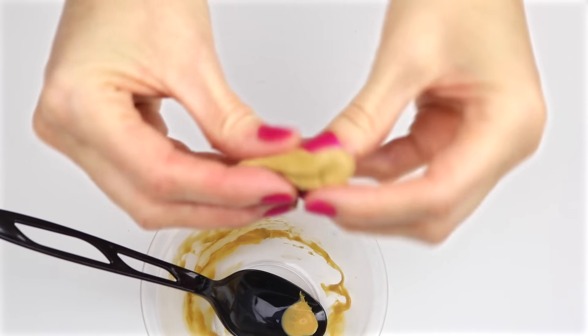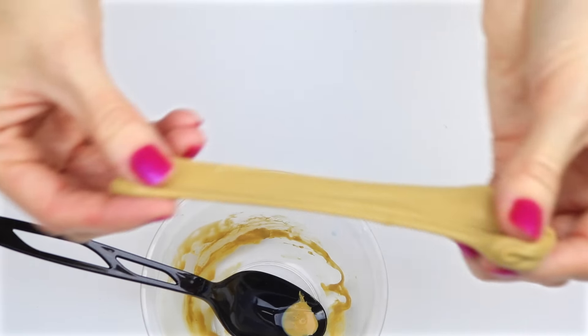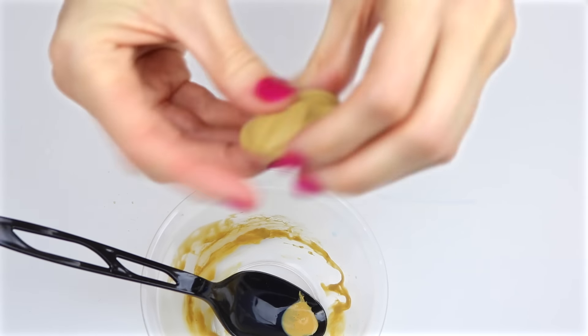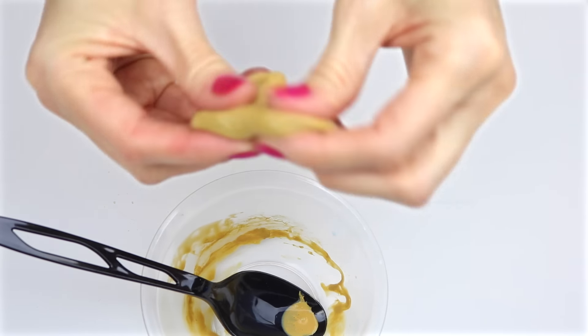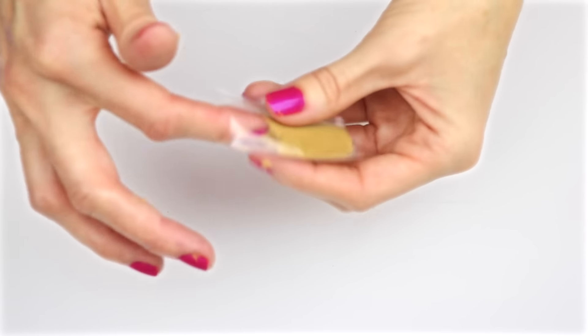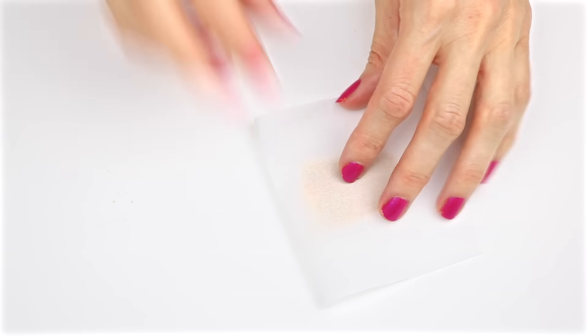And here is my mocha colored slime. Add as much or little of the slime to the cup as you would like. And then using the same method as before, seal the top of the cup.